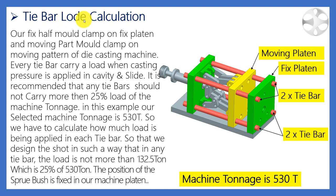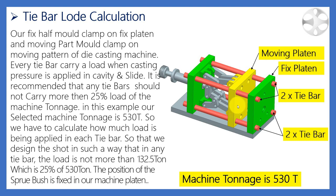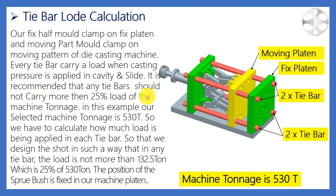Let's start this video: tie bar load calculation. This is a clamping layout of our HPDC machine. You can see here the moving platen and fixed platen, and the tie bars. There are four tie bars available in our HPDC machine to guide the platen. Our fixed mold is clamped in the fixed platen and our moving mold is clamped in the moving platen.